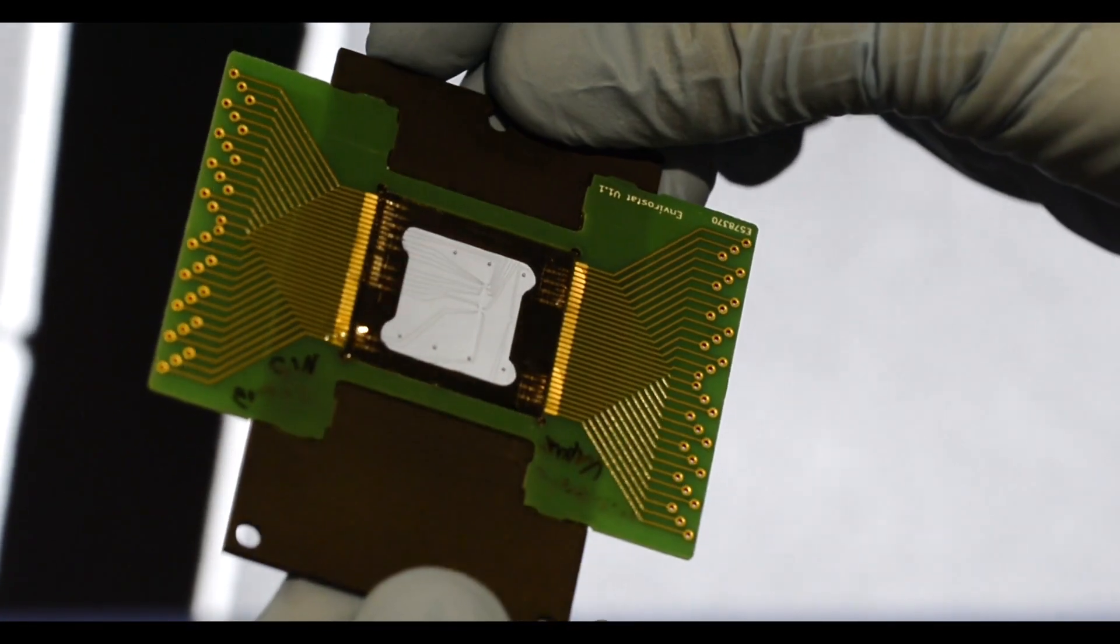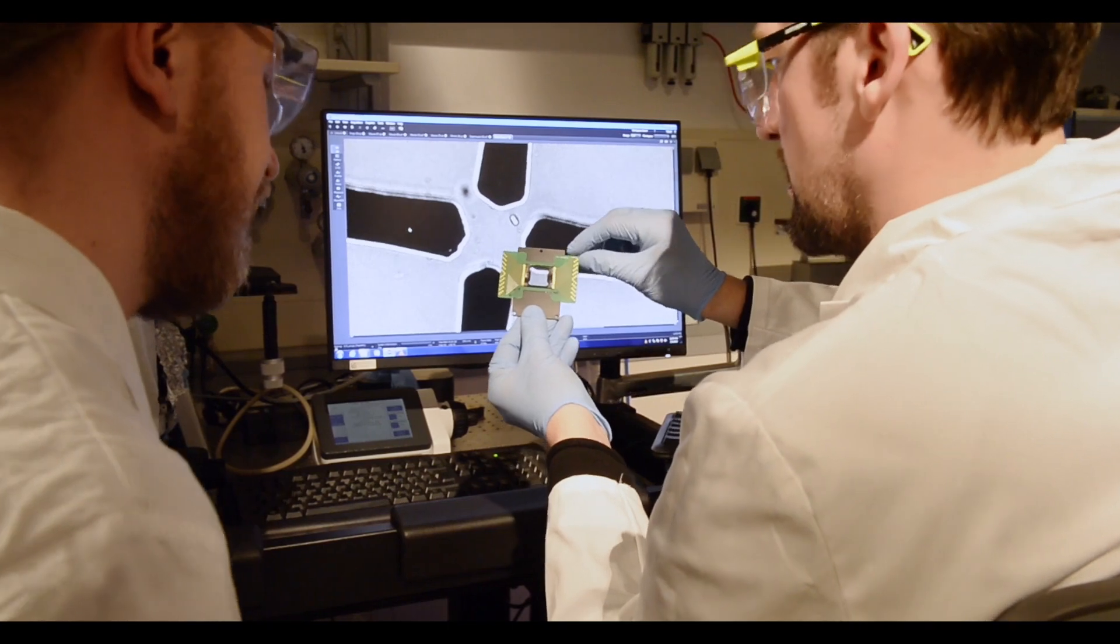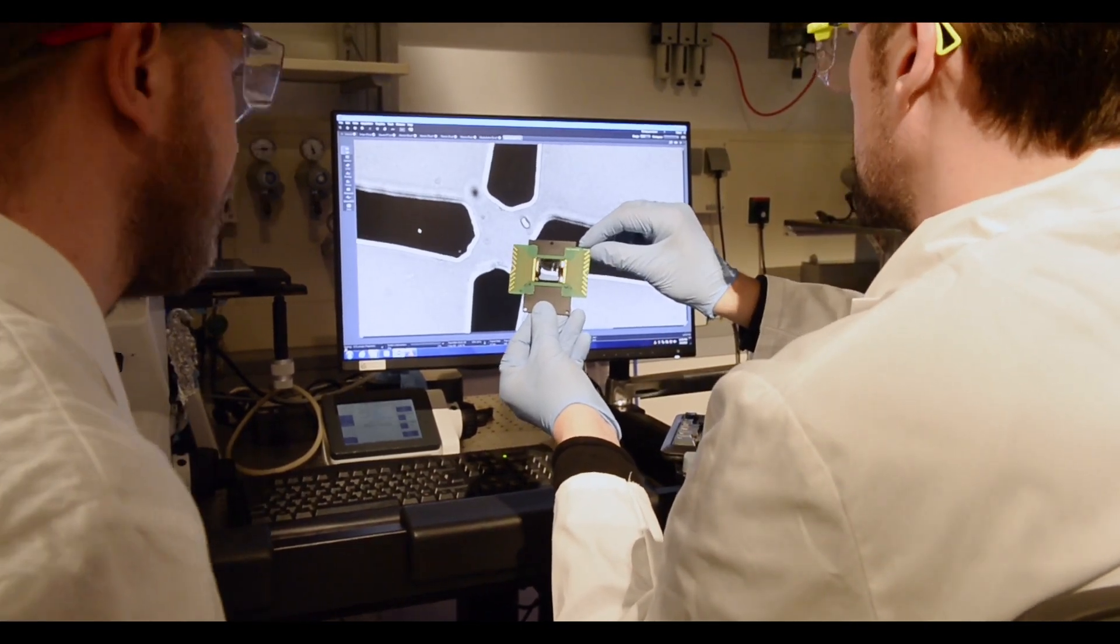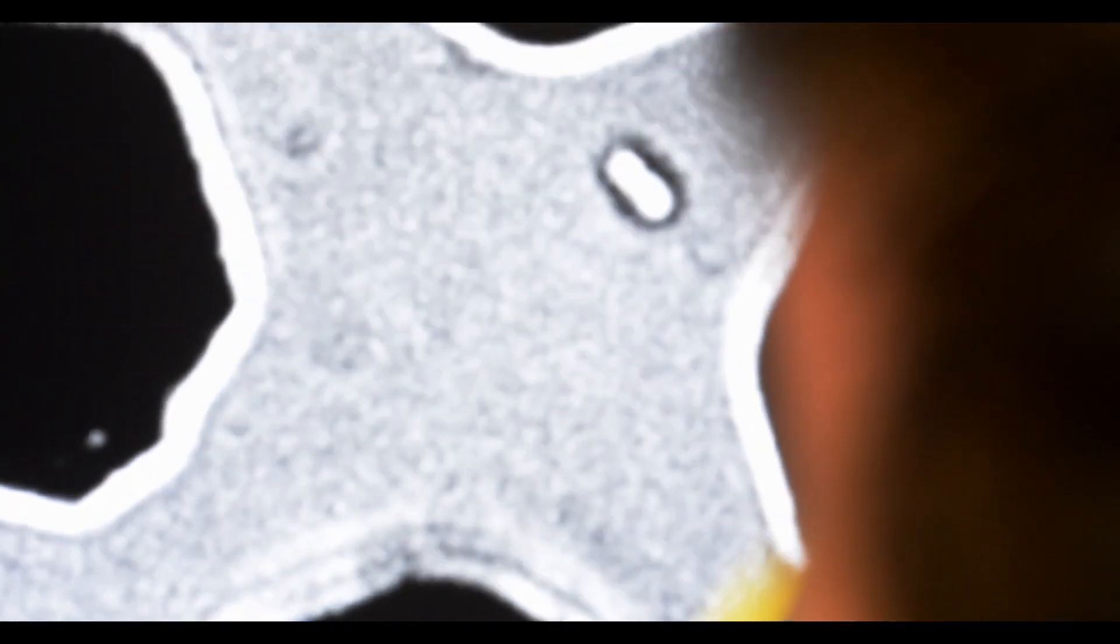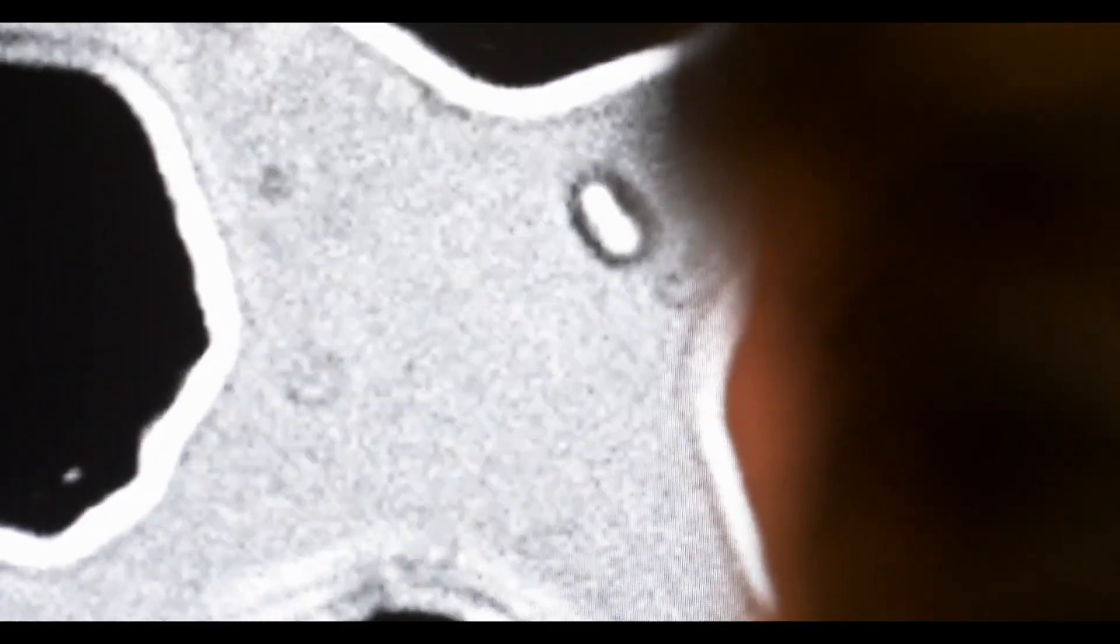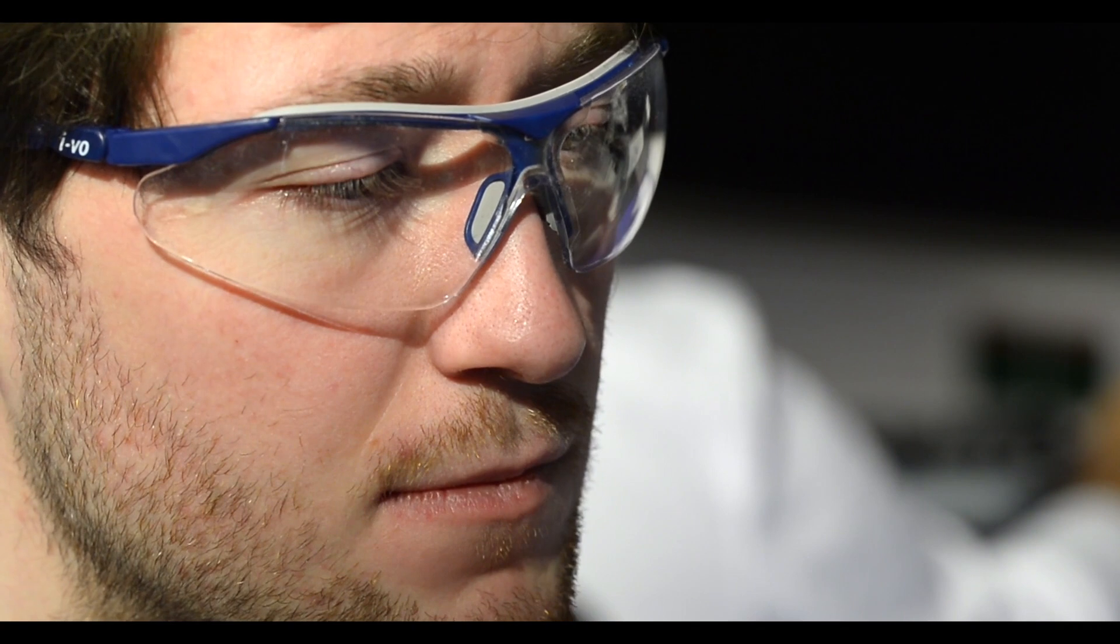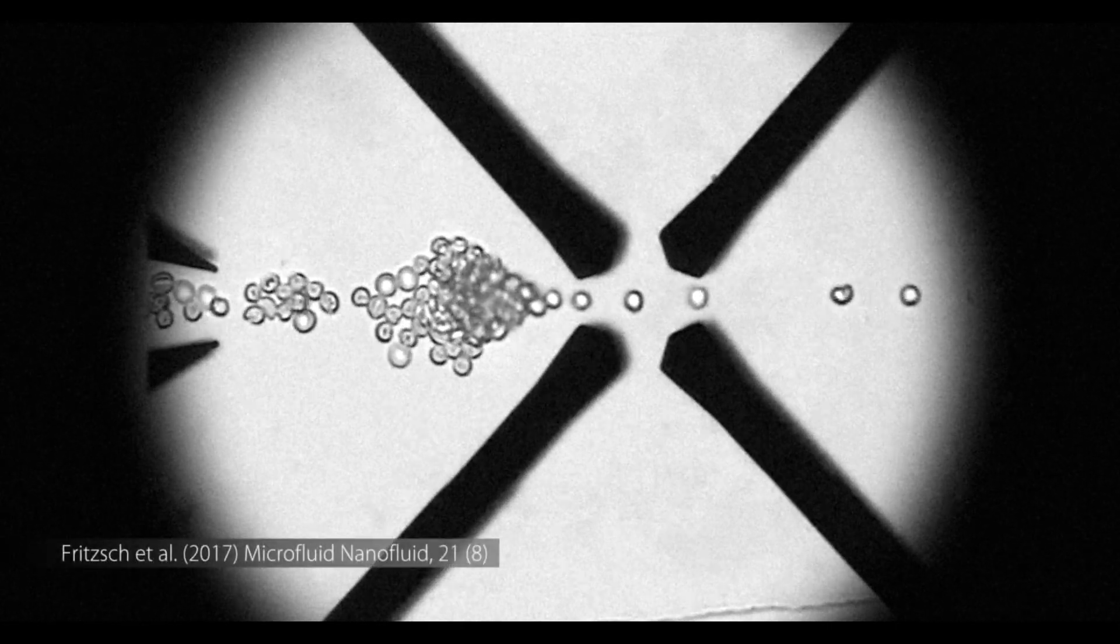To name one example, the self-developed Envirostat bioreactor enables the analysis and observation of individual cells over a protracted period of time. The creation of a genuinely controlled cell environment constitutes one great advantage of this system.